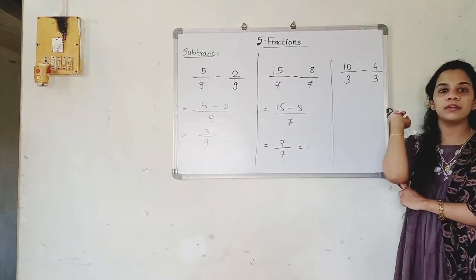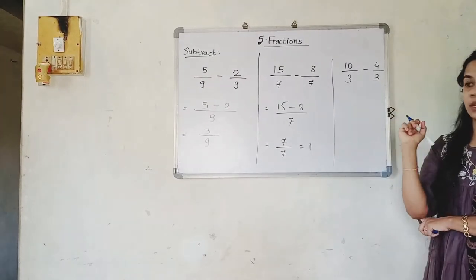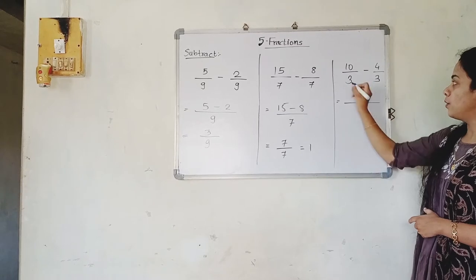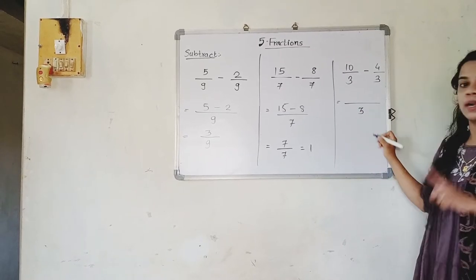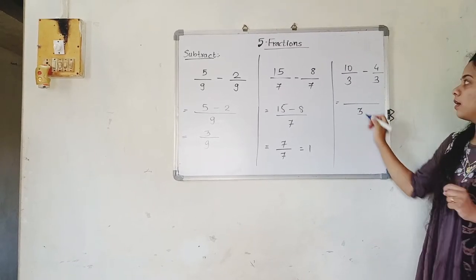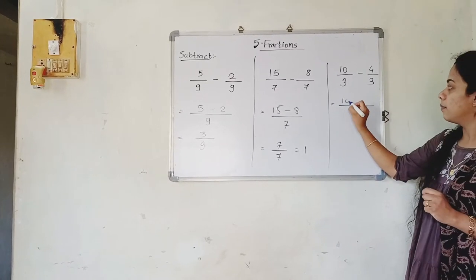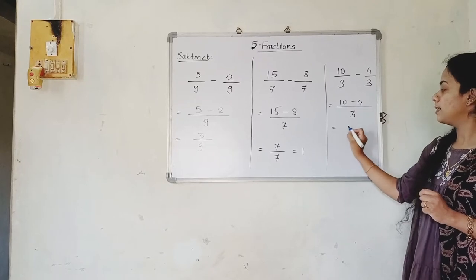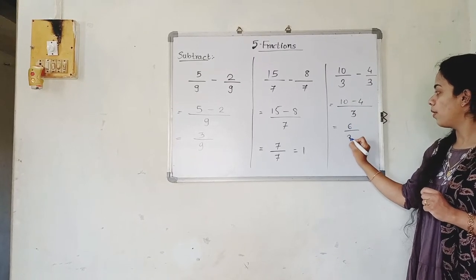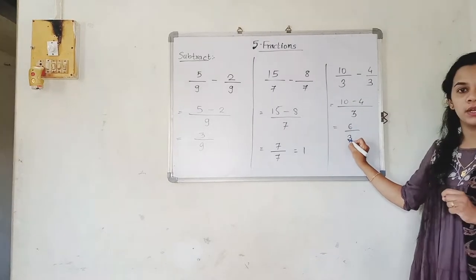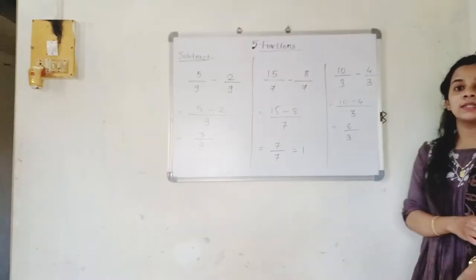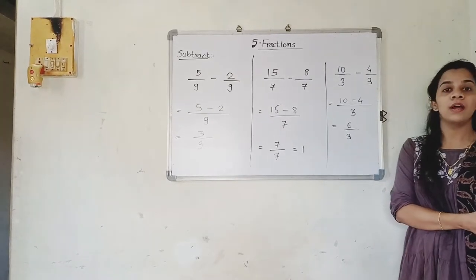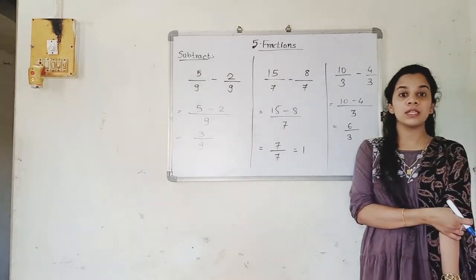Now 10 upon 3 minus 4 upon 3. The denominators are the same, so we write it one time: 10 minus 4 is 6 upon 3. So we have studied the subtraction of like fractions.